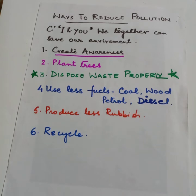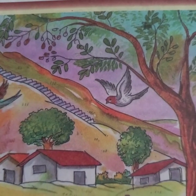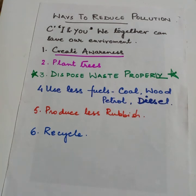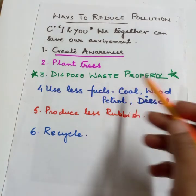Plant more and more trees to get oxygen and to maintain a balance between oxygen and carbon dioxide in nature. If plants are not there, soil erosion will occur because roots hold the soil in place. Loss of topsoil, which contains humus, means plants cannot grow. If plants do not grow, animals that depend on plants will also perish. So plant more and more trees for clean air and proper food.